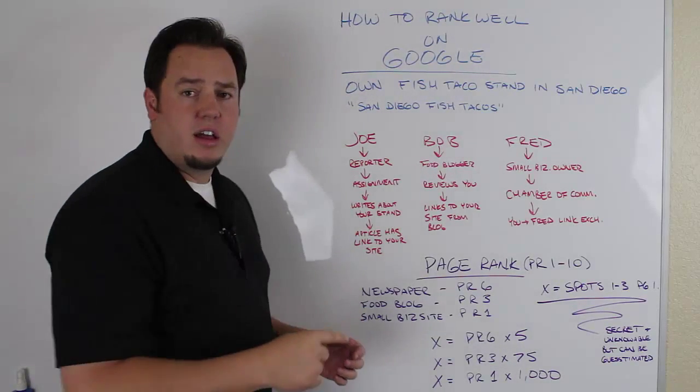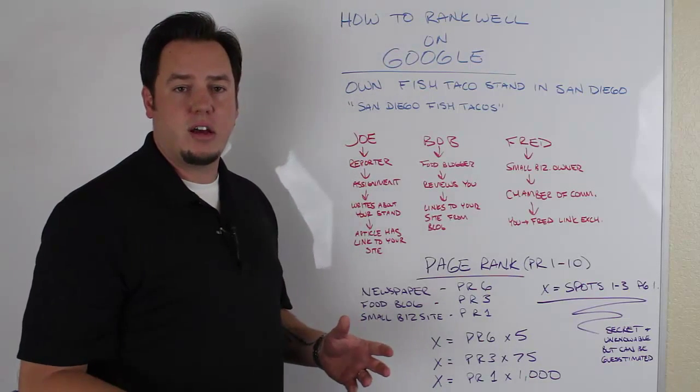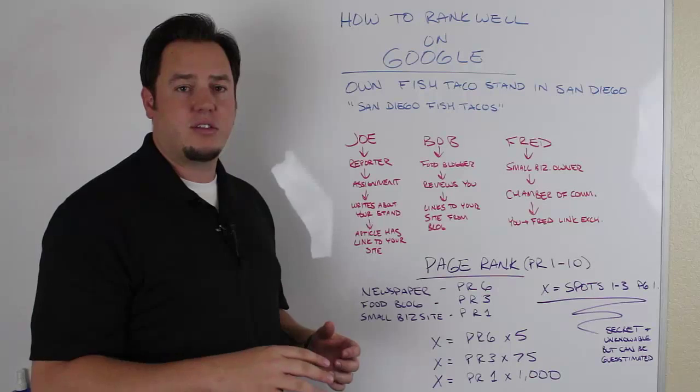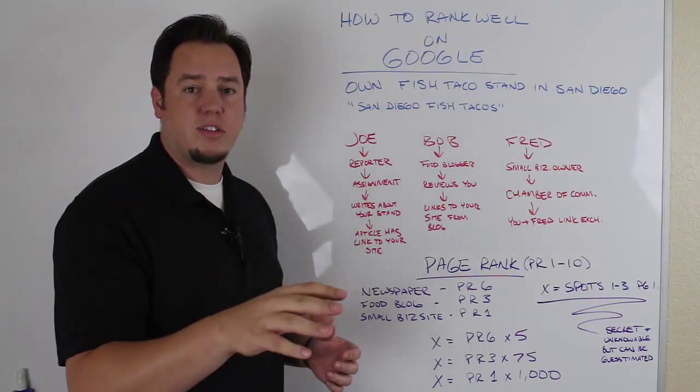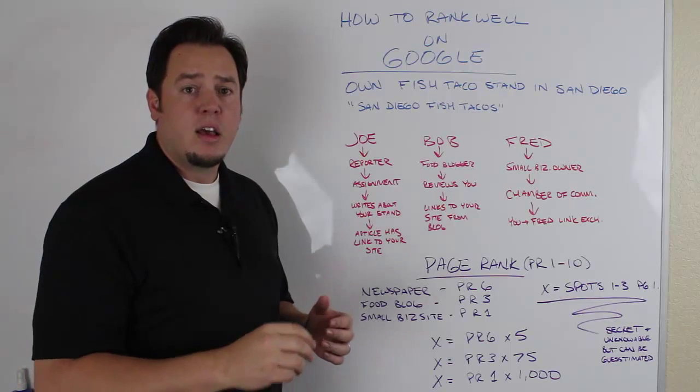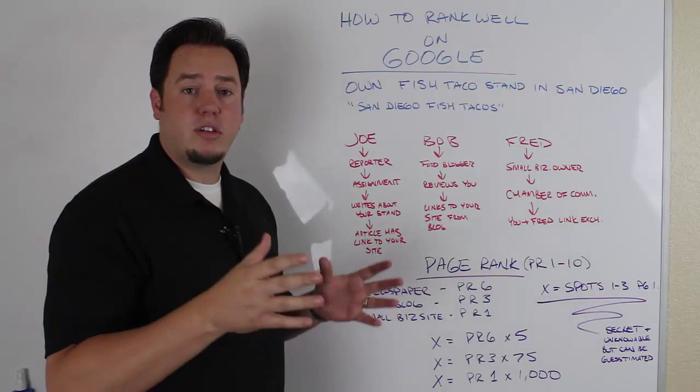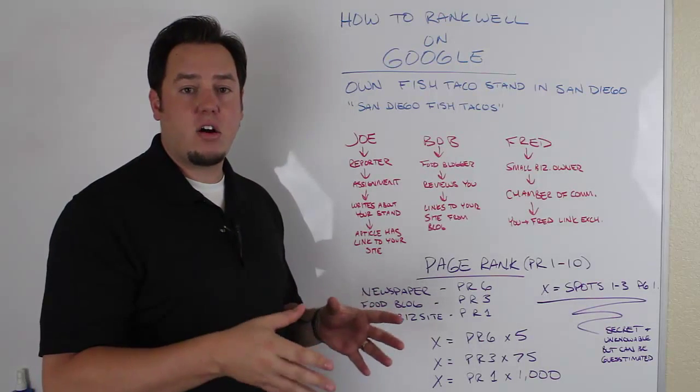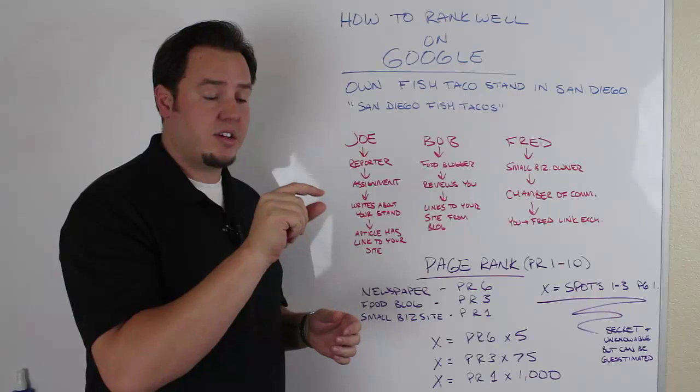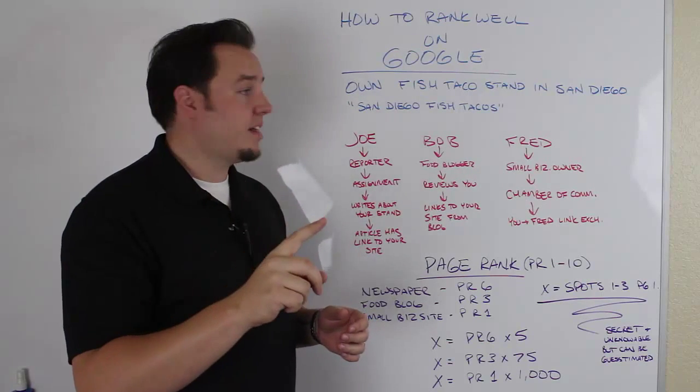So Joe's a reporter, and he works for the local newspaper, and he gets an assignment to rate local taco stands. So he's heard about your taco stand, decides to go try yours out. He absolutely loves your fish tacos, and he writes about it in his article. Now in his article, his article gets printed in the newspaper, but it also goes on to the newspaper's website. And in that article on the website, he provides a link over to your website. So you get a link there.